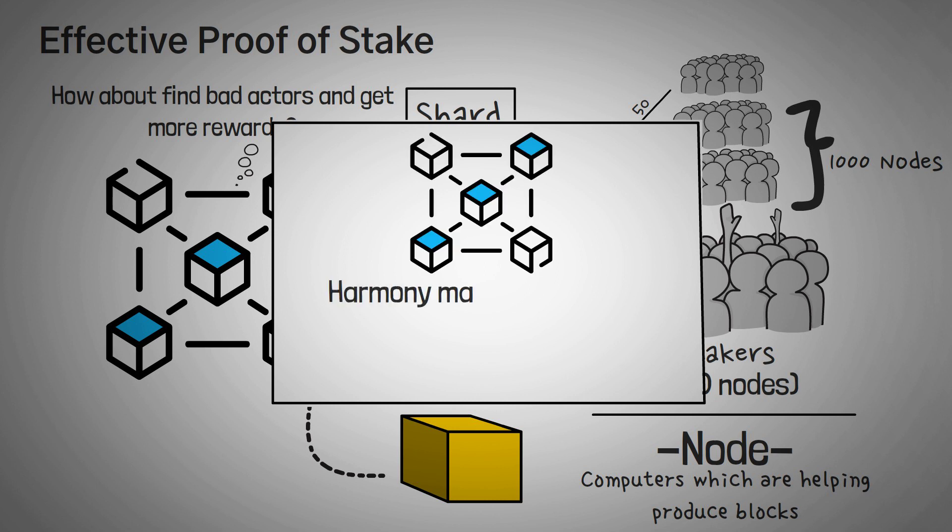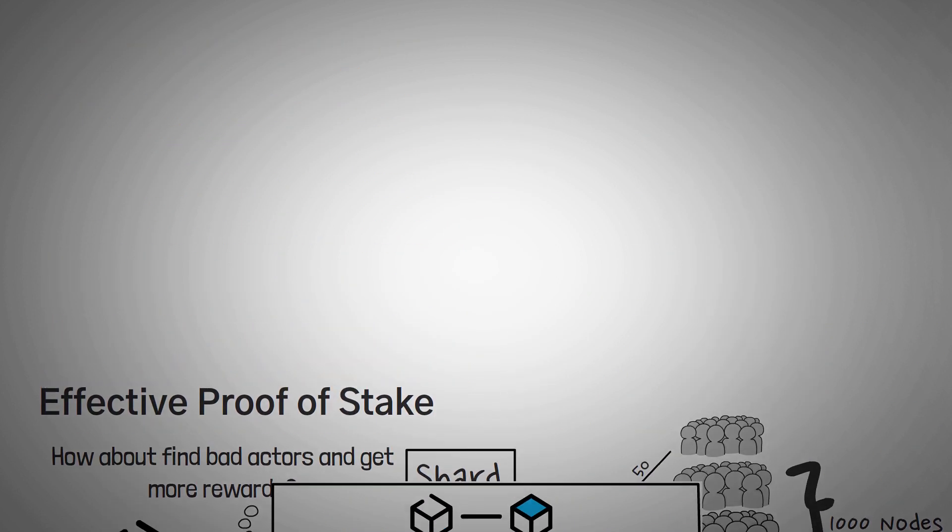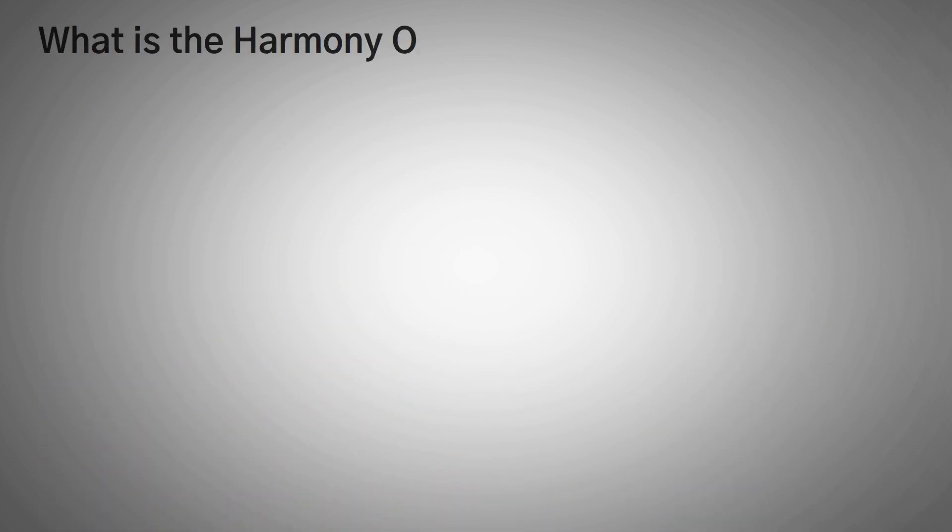So Harmony has introduced a few clever modifications to make sure their ecosystem is fast, scalable, and secure. But what actually is their ecosystem? Have you heard of any dApps on their network? Have they connected any other chains to Harmony?